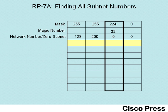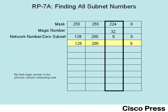To find each successive subnet number, you simply keep repeating step five. In step five, you start by copying the three boring octets — the ones outside the box — down to the next subnet number. Then you add the magic number to the previous subnet number's interesting octet value. Visually, you take the magic number 32 and add it to zero, which gives a value of 32 in the interesting octet. So the next subnet number is 128.200.32.0.